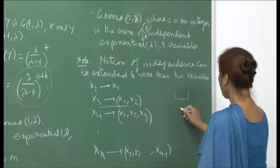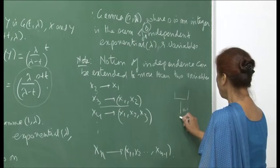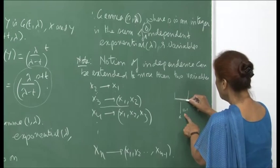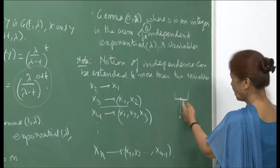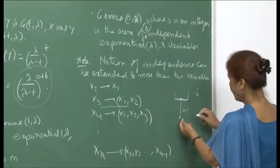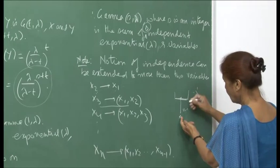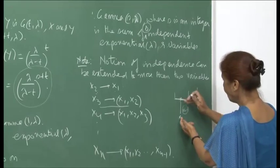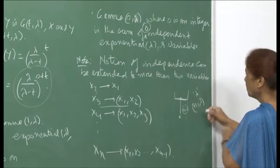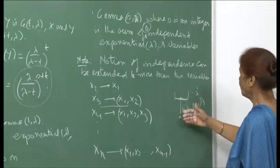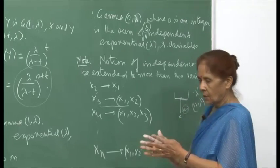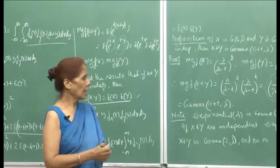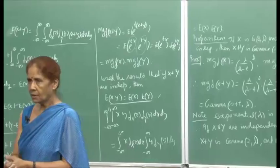This connects to the queuing interpretation given earlier: if service times are independent Exponential(λ) random variables, the total time until n customers are served is Gamma(n, λ). Thus, n exponential distributions with the same parameter λ add up to a Gamma(n, λ) distribution. We will continue this exploration in the coming lectures.